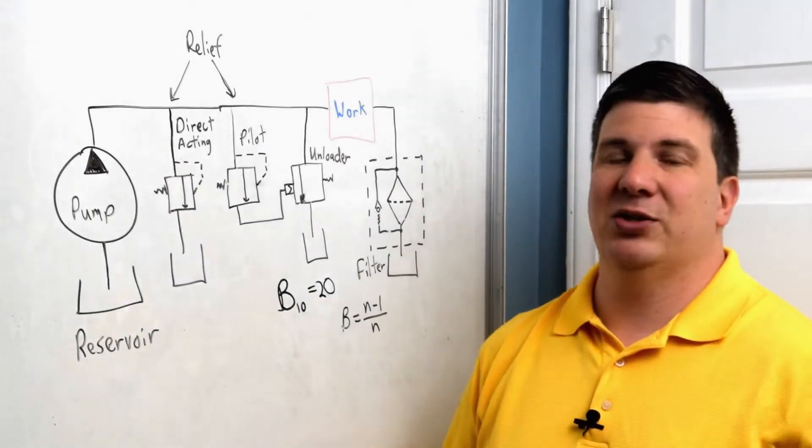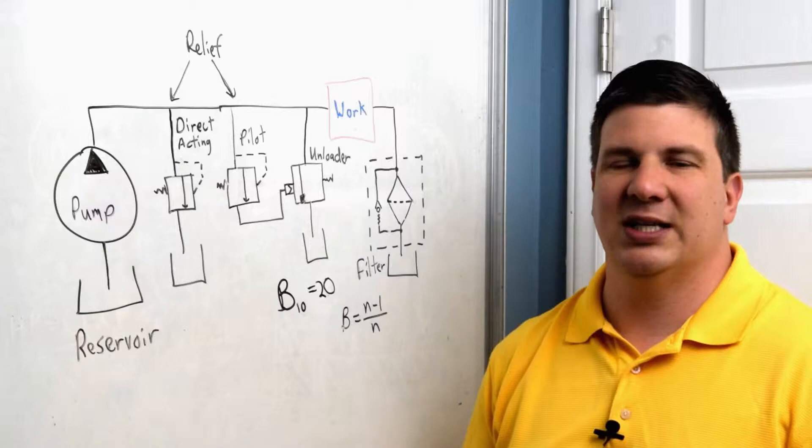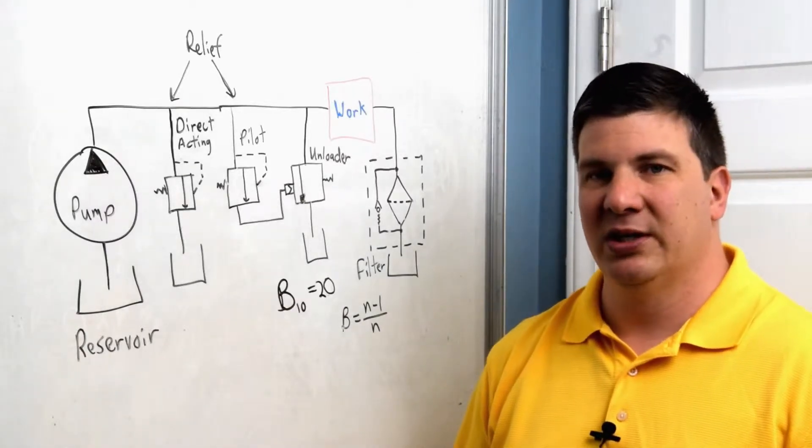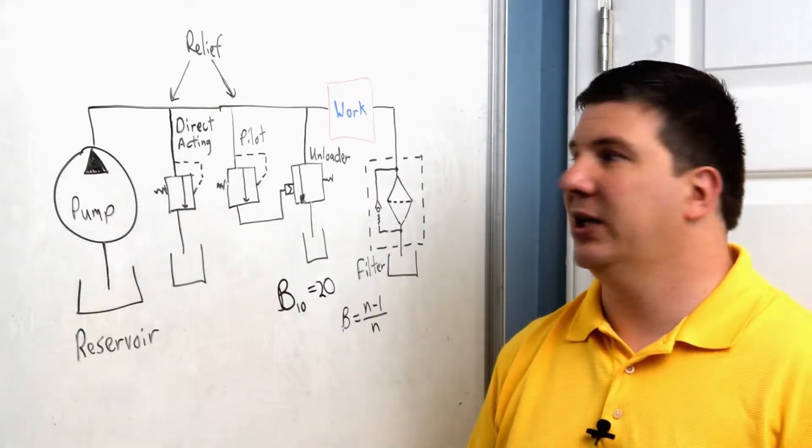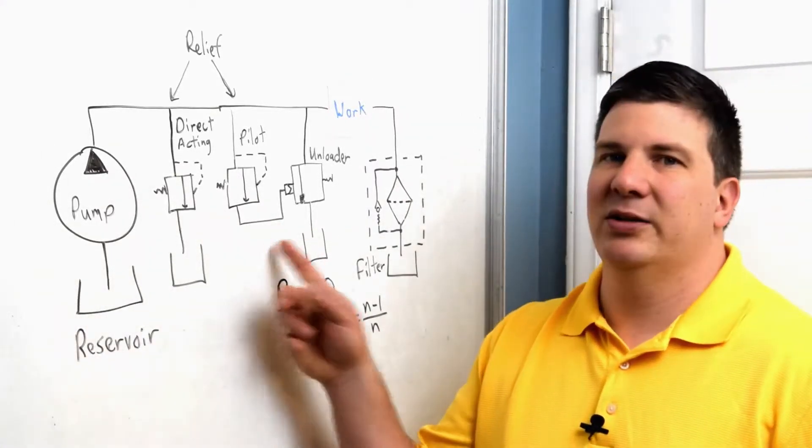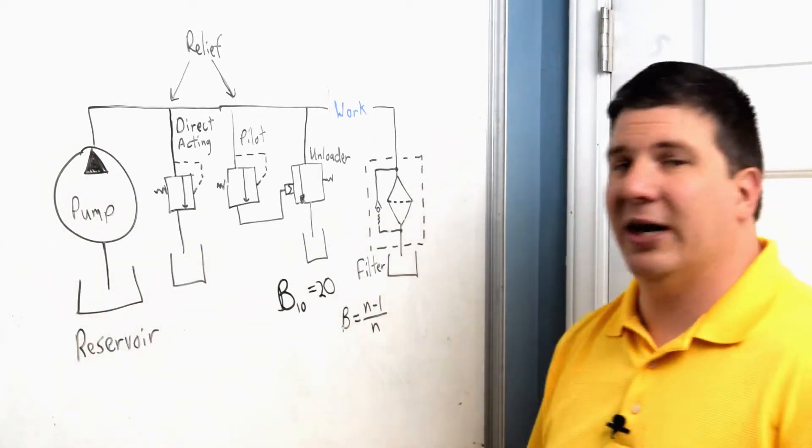Basically, it comes down to what is your flow. If your flow is reasonable, I'd say under 30 to 50 gallons per minute, you could probably get a direct acting valve for what you need. If it's over that, you're probably going to have to use a pilot acting valve. So how do they work?